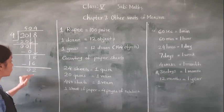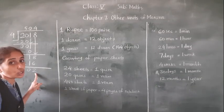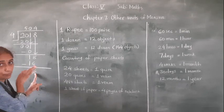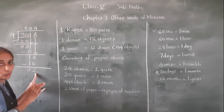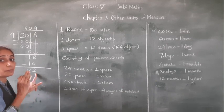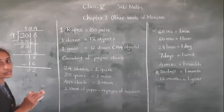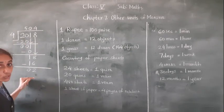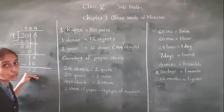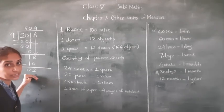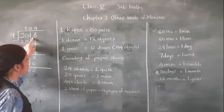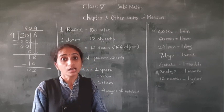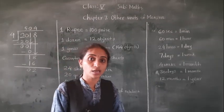2018 is not divisible by 4. Here we got remainder 2, not 0. The year which is completely divisible by 4 is called a leap year. For 2018, it is not divisible by 4, so 2018 is not a leap year.